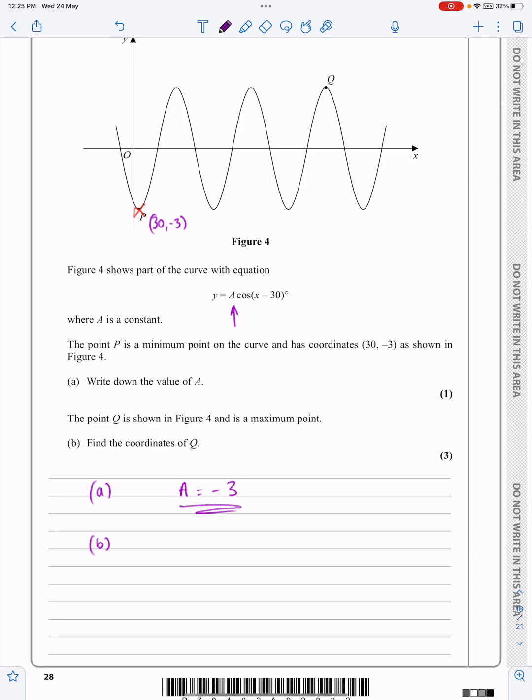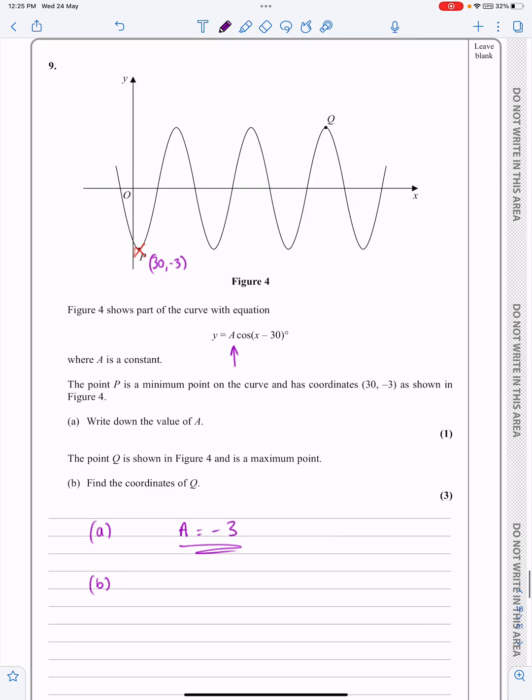On to part B, and before I do part B, I'm just going to have a quick talk about what the periods are for this one here. We know that this little bit there is going to be 30 degrees because of that. It's been shifted 30 degrees over. But then we just have a cos graph that's not affected in any other way in terms of the period. So, what I'm actually going to have is that that length all the way across there is going to be that little 30 plus 180.